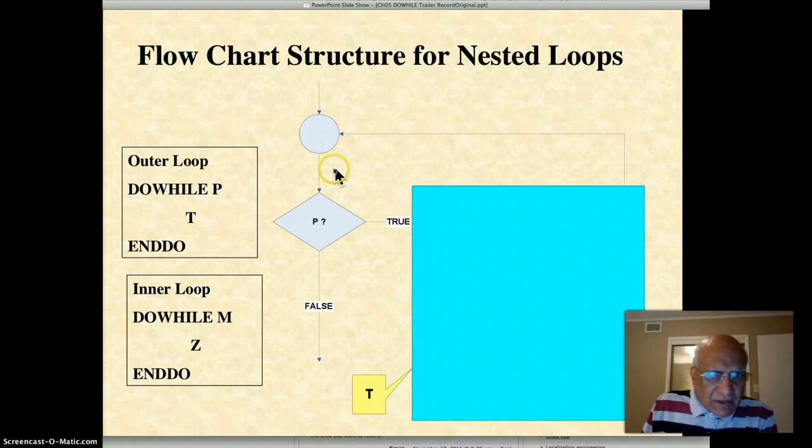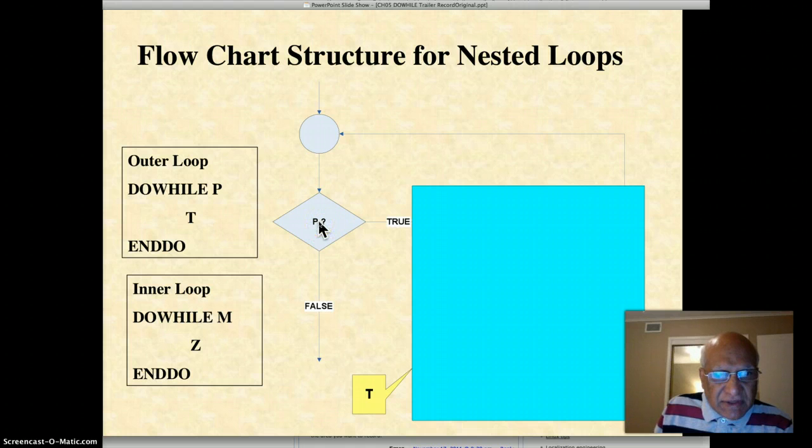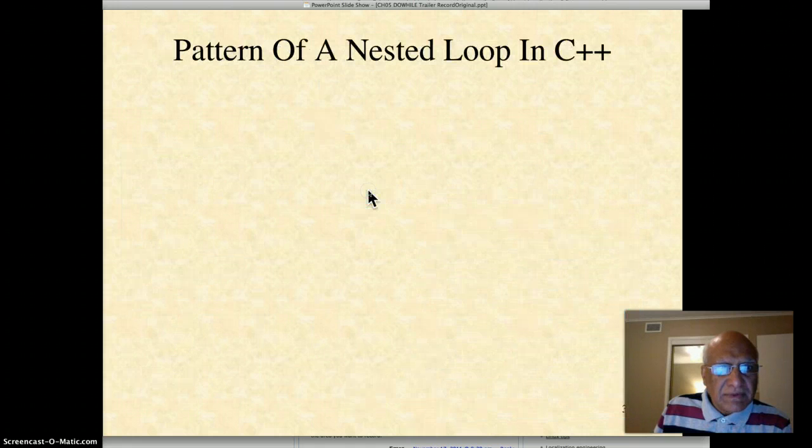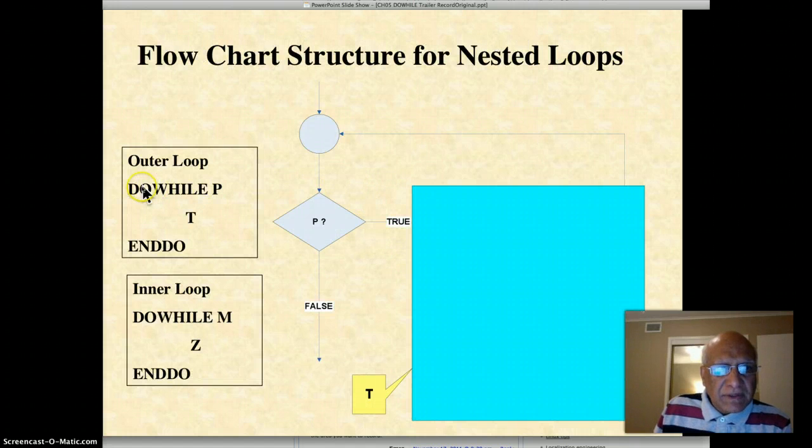In the next slide we show the pattern of a nested loop. This is the pattern here shown in a flowchart. Think of this not as a do-while but just while. So while condition P is correct, then do T. T is this box here, and T includes an inner loop which might be something like while some other condition M is true, then do some other task Z.